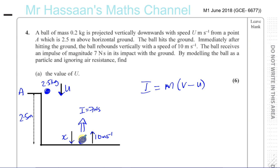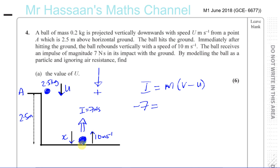The ball has changed momentum, so the change of momentum equals the impulse. The impulse is acting upwards. As the ball was projected downwards, I'm going to take the downward direction as positive. That means the impulse is going to be negative 7, because it acts upwards to cause the ball to change direction from down to up. The mass is 0.2 kilograms — that's just a scalar with no sign.